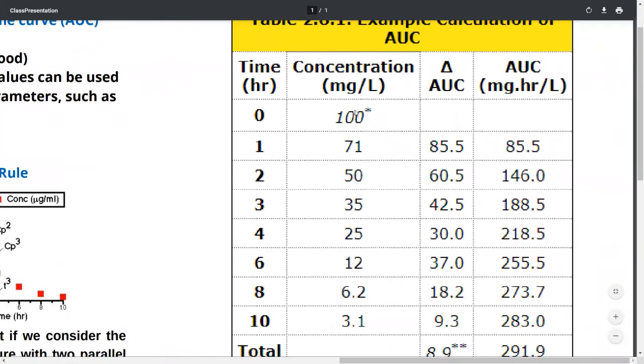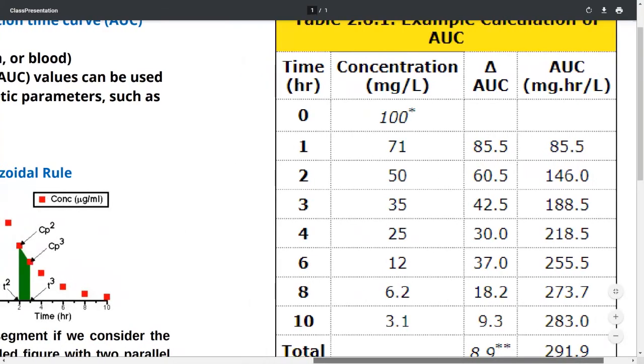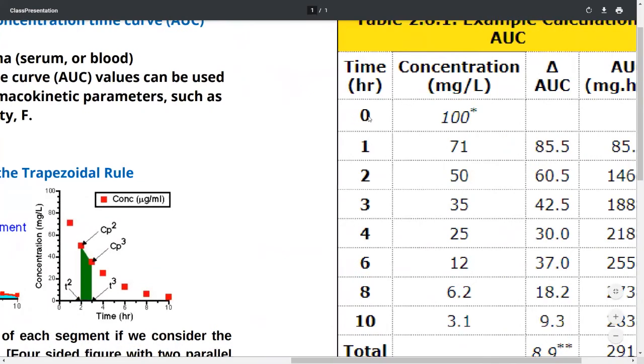Here we calculate AUC by adding the concentrations and dividing by 2, then multiplying by the time difference. The time difference is 1 hour. So 100 plus 71 equals 171, divided by 2 is 85.5. When you multiply 85.5 by 1, we get 85.5, so AUC becomes 85.5. Similarly, we need to calculate 1 to 2, 2 to 3, and so on.